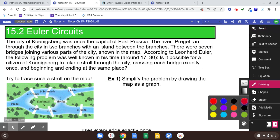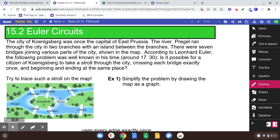So that's a question. Try to trace such a stroll on the map. Try it yourself, see if you can do it. Maybe you start at point A and cross this bridge, and then this bridge. Try that out, try it yourself real quick.